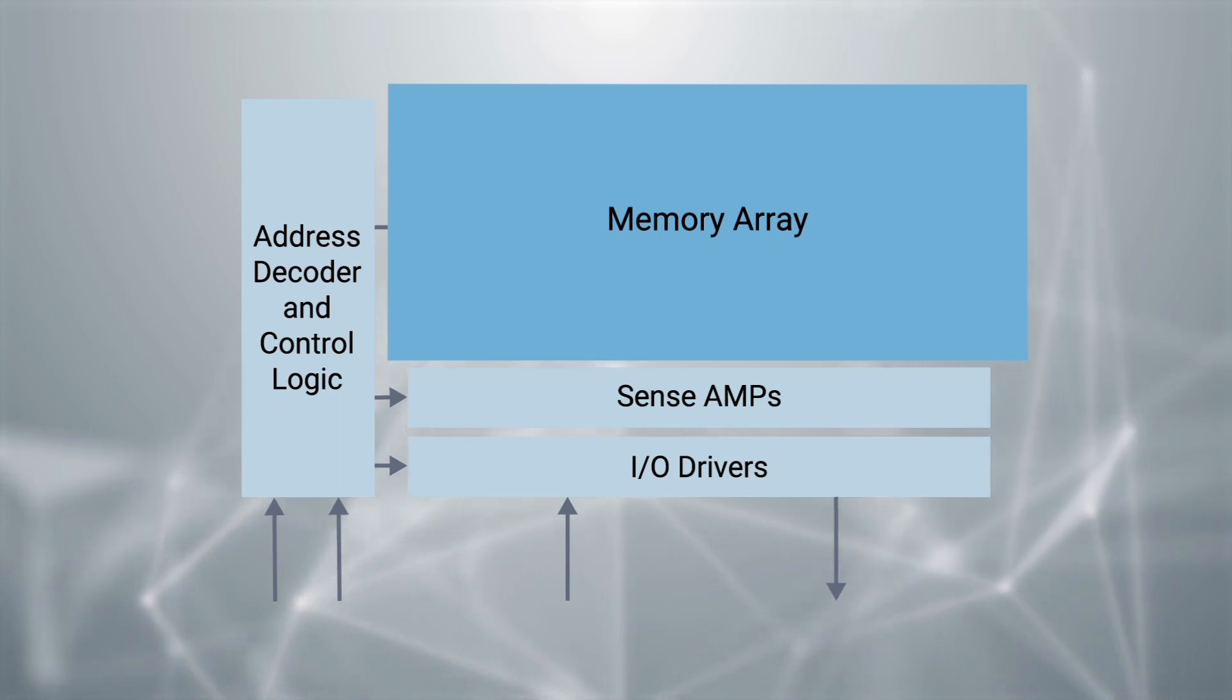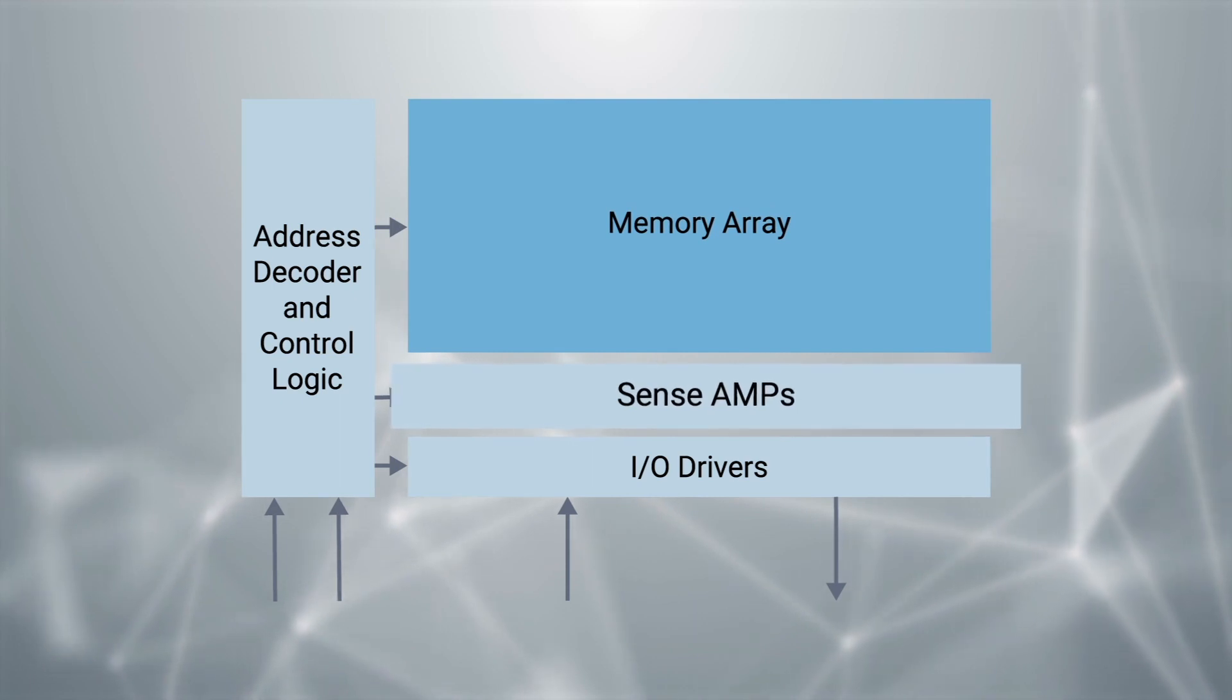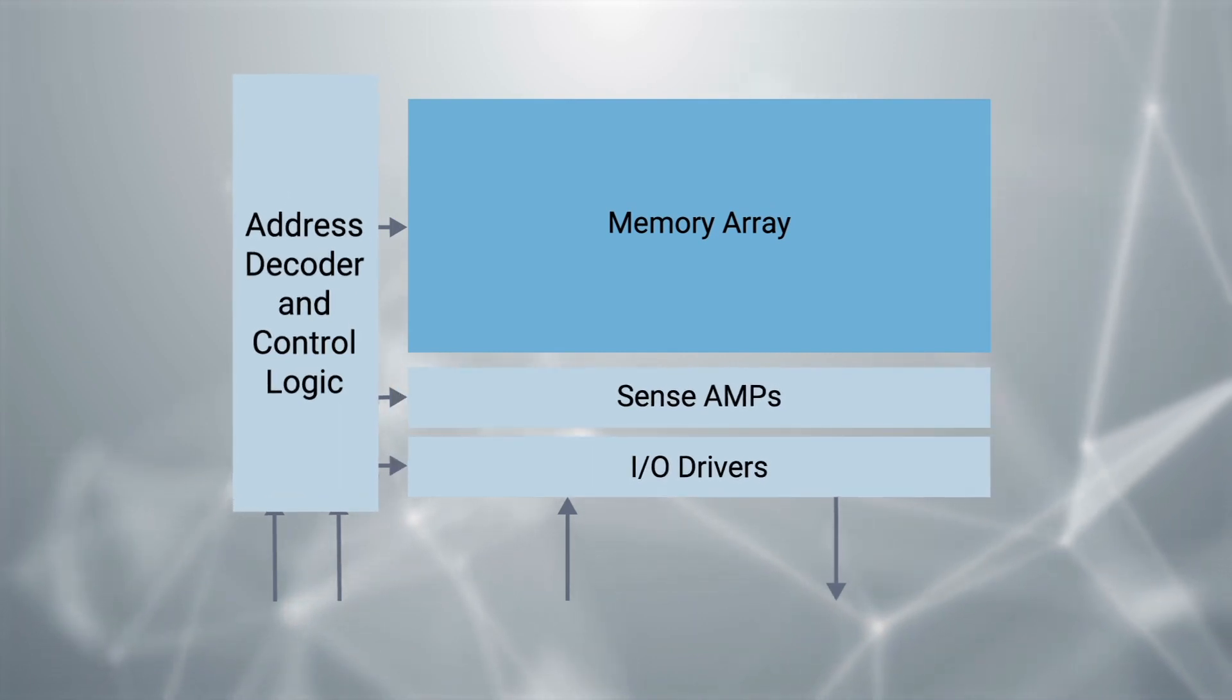The data is written into and read from the array through the SRAM periphery made up of sense amplifiers and IO drivers. The address control logic helps select where to write into or read from.